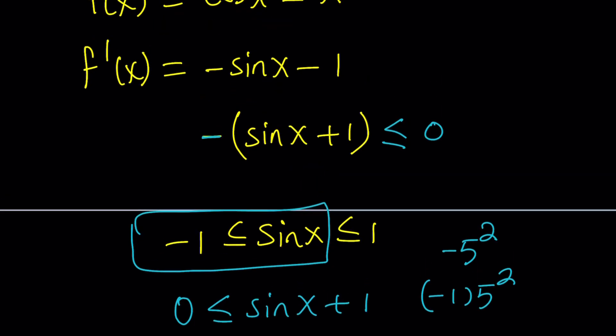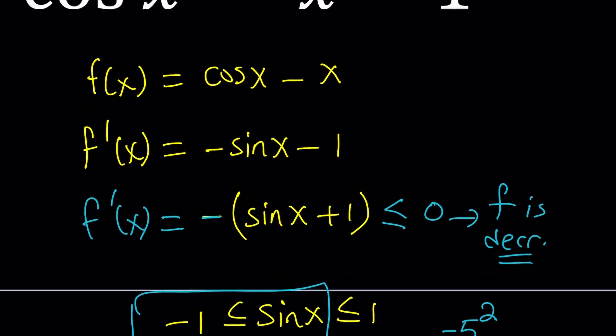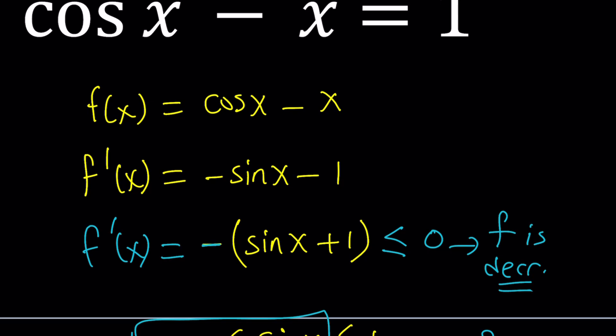So this is always less than or equal to 0. If f prime is less than or equal to 0, that means f is decreasing. f is going to be decreasing. And what does that mean? If f is decreasing and you set f of x equals 1, you set it equal to 1, this is always a decreasing function and this is a constant function, whose graph is horizontal. What's going to happen?